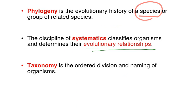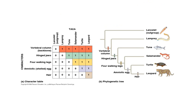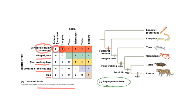Taxonomy involves the ordered division and naming of organisms. Every species has a two-part name according to binomial nomenclature — for example, our scientific name is Homo sapiens. The phylogenetic tree is drawn according to common characteristics such as vertebral column, jaws, walking legs, amniotic shell, or hair. If an organism lacks a characteristic, we record zero; if it has it, we record one.